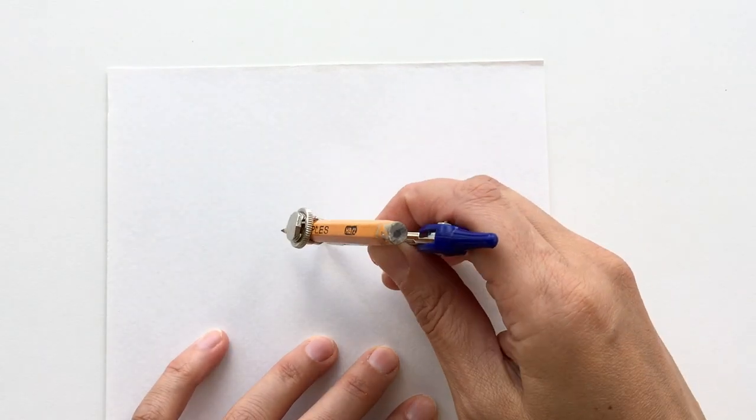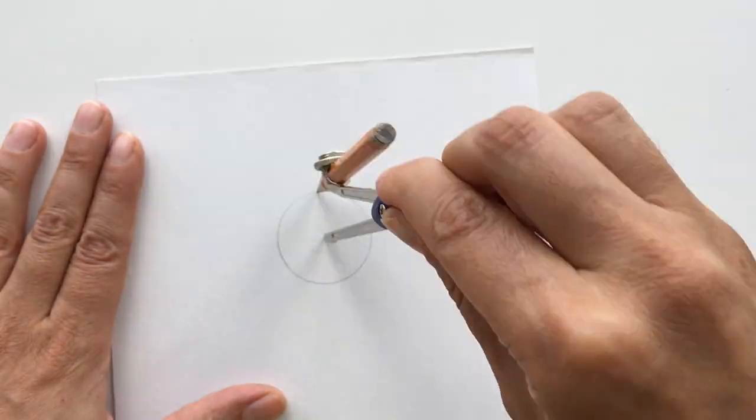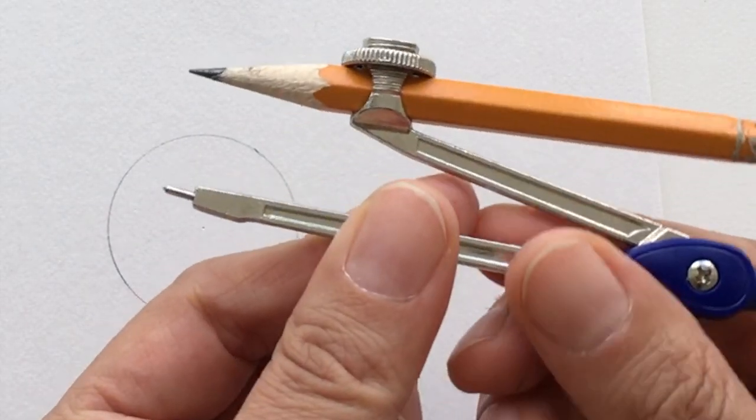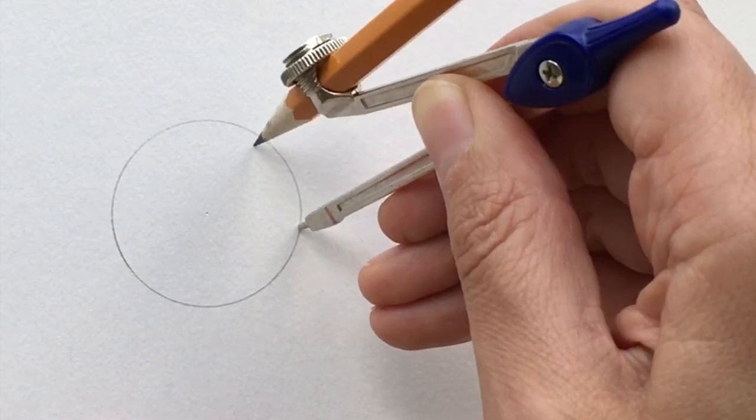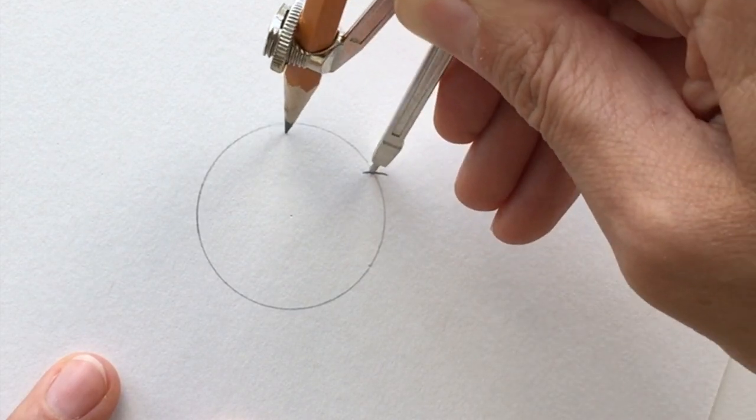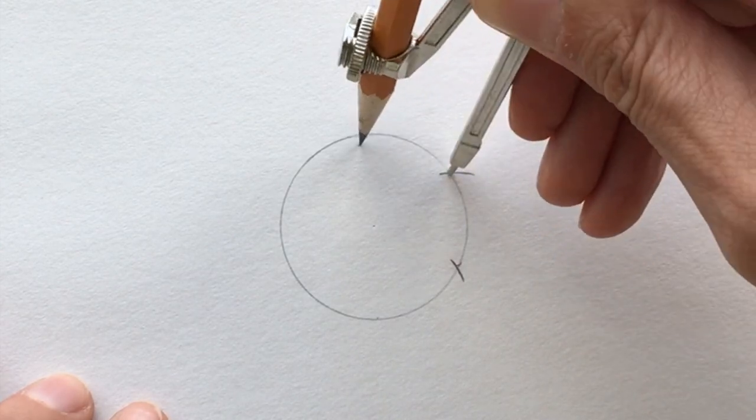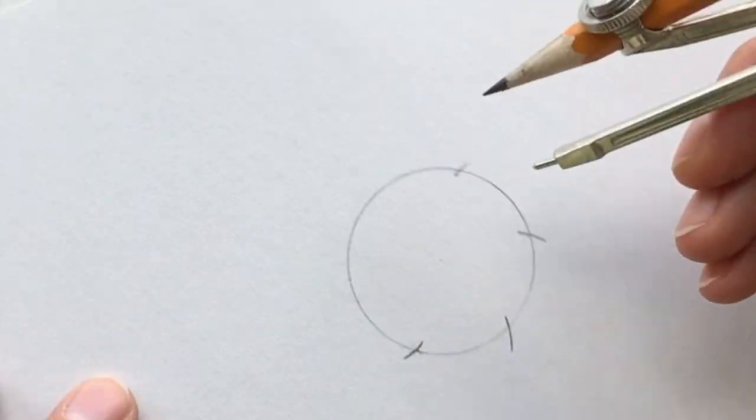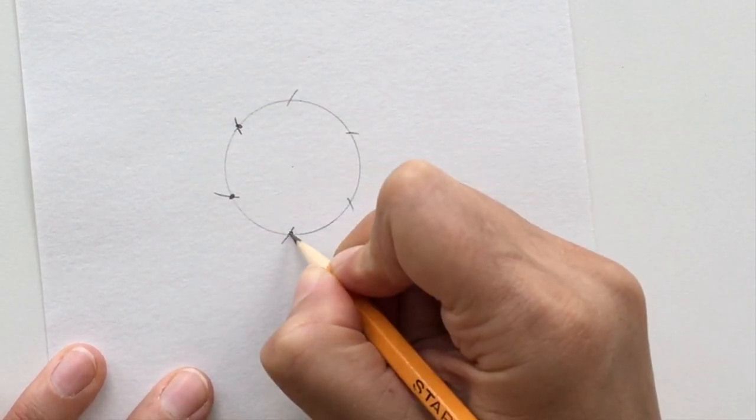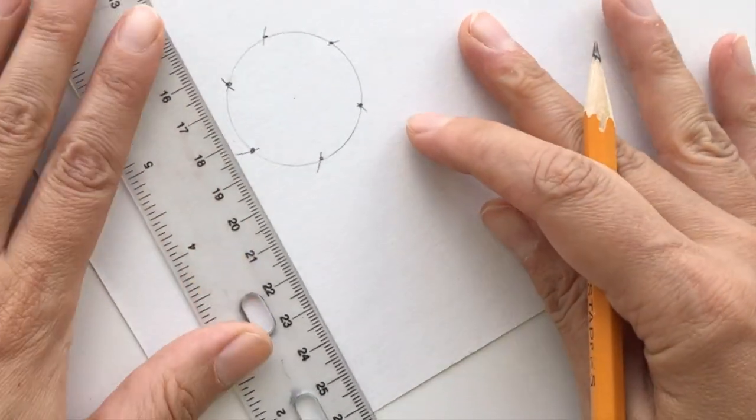Use a compass to draw a circle. Without changing the width of the compass, divide your circle outline into six equal parts. Connect the dots to form a hexagon.